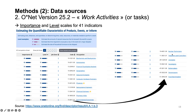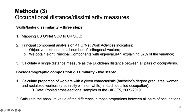What we do with the O*NET is conduct a principal component analysis on the 41 work activities indicators, extracting eight principal components and developing a single distance measure using Euclidean distance. This gives us a skill dissimilarity score between all 369-by-369 pairs of occupations in the UK SOC. We do the same with differences in sociodemographic composition — calculating the proportion of workers with various characteristics from the UK LFS, including share with graduate degrees, share of women, and share of racialized workers in each occupation, then calculating the absolute difference in those proportions between all possible pairs of occupations.